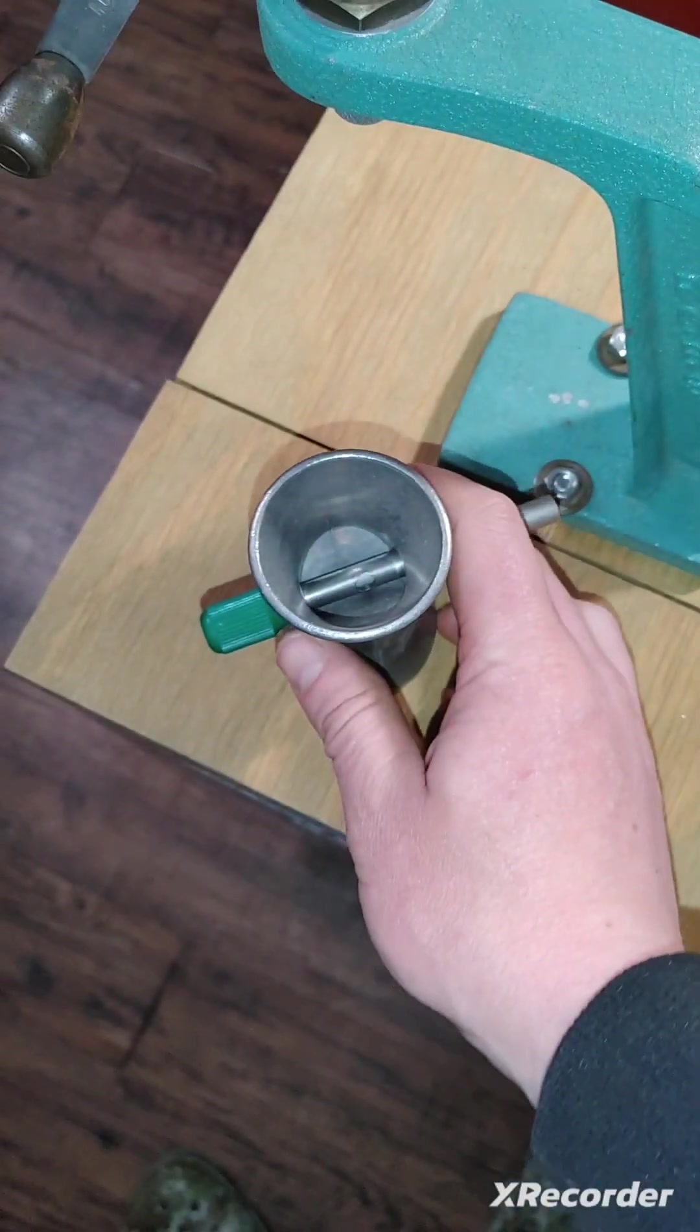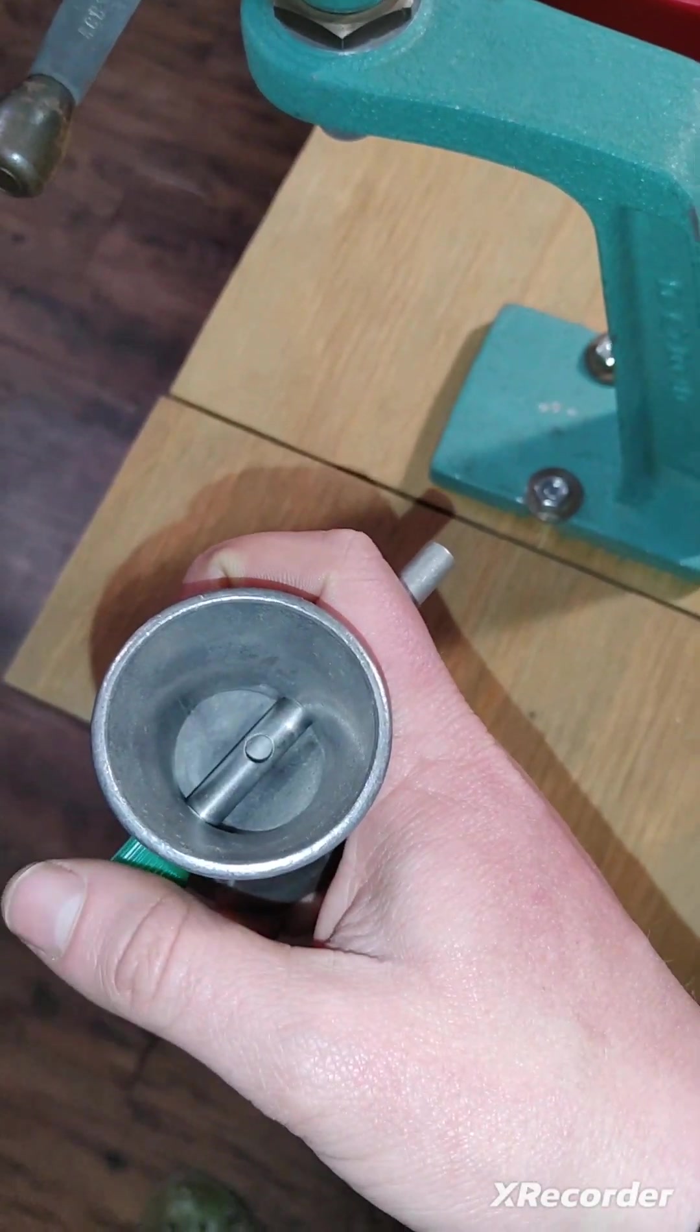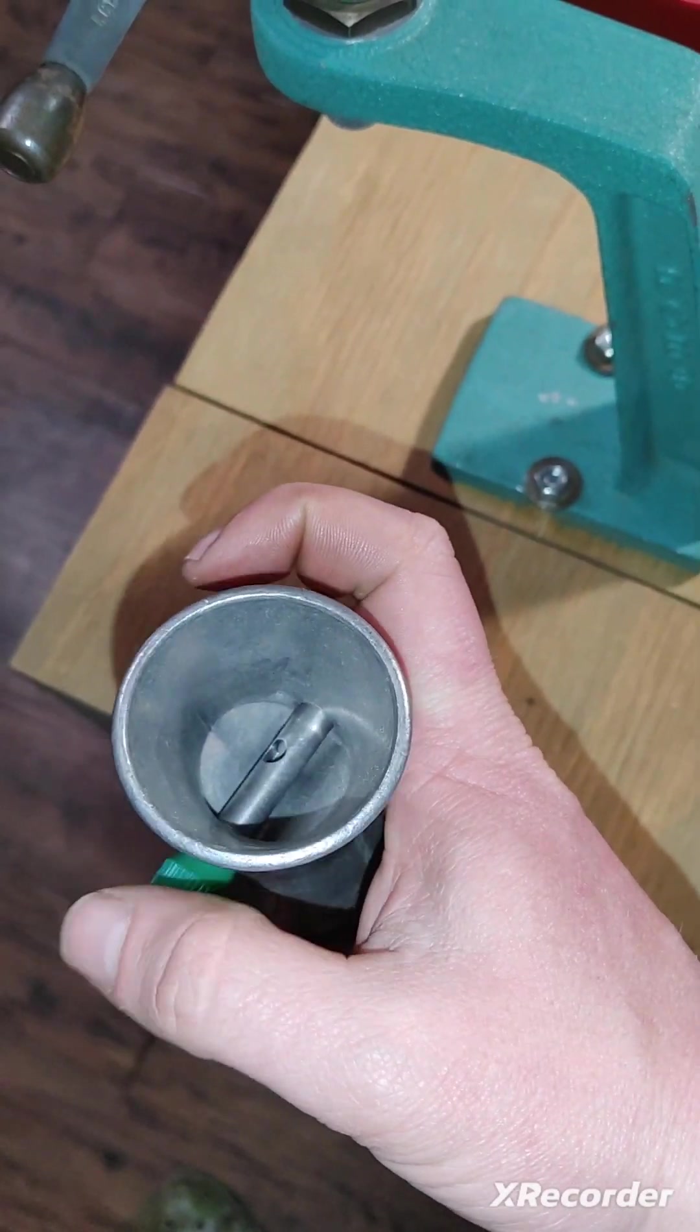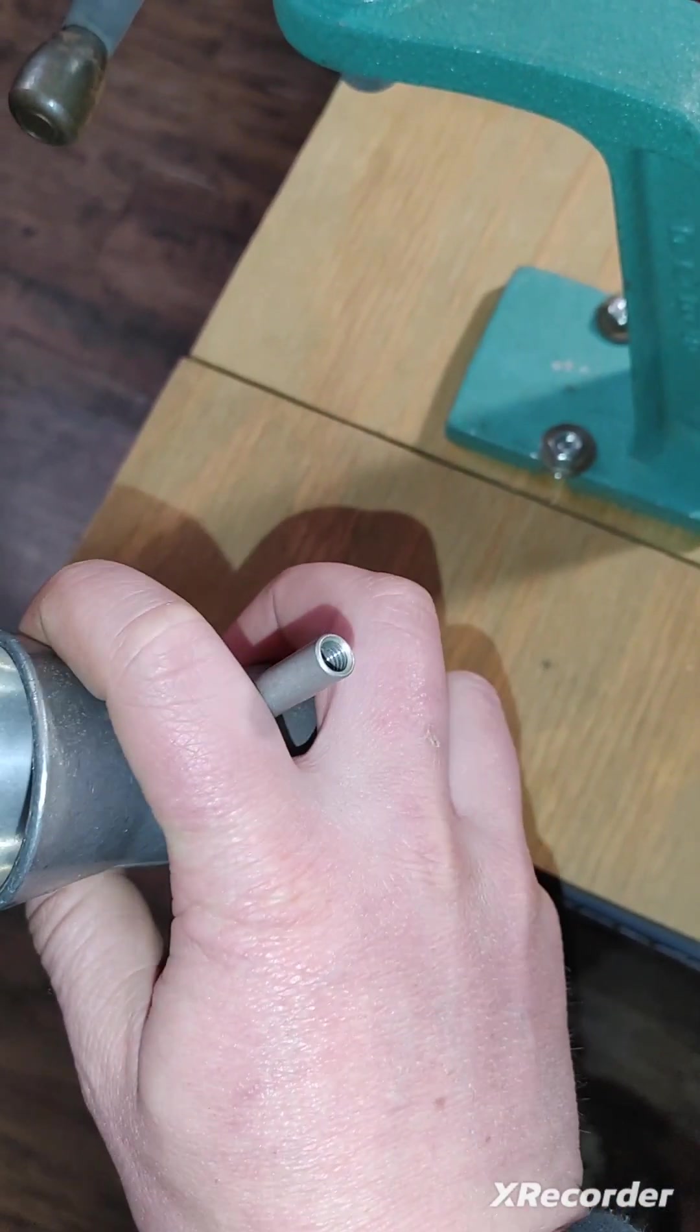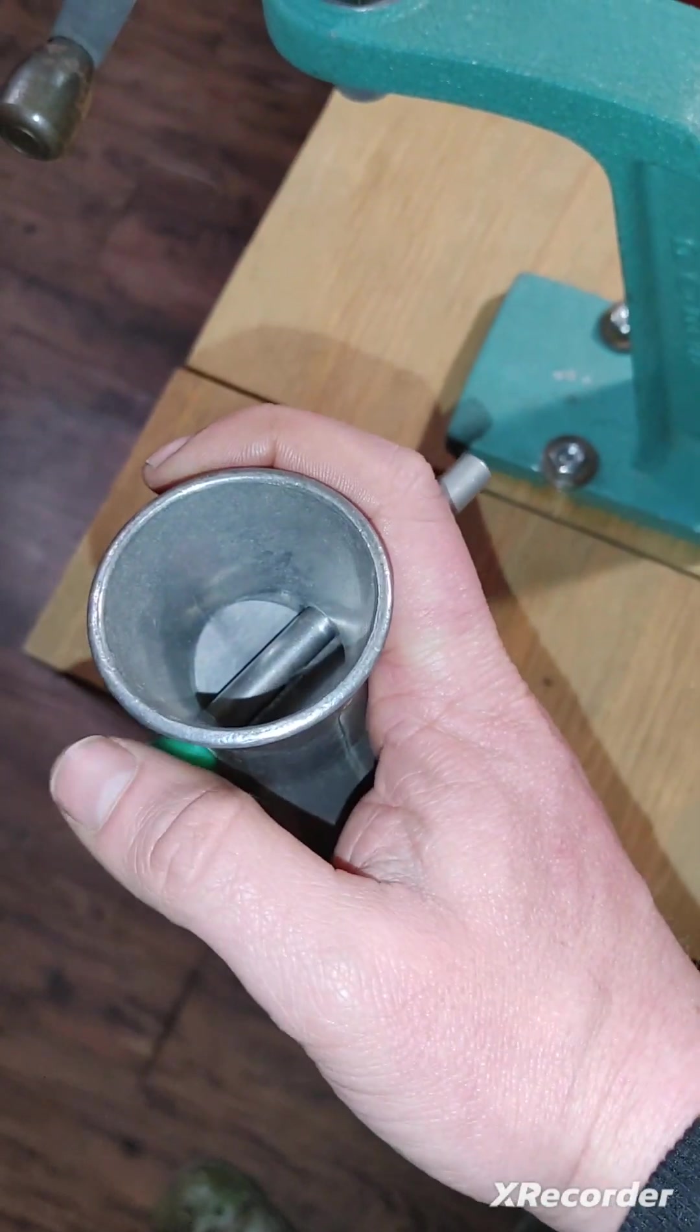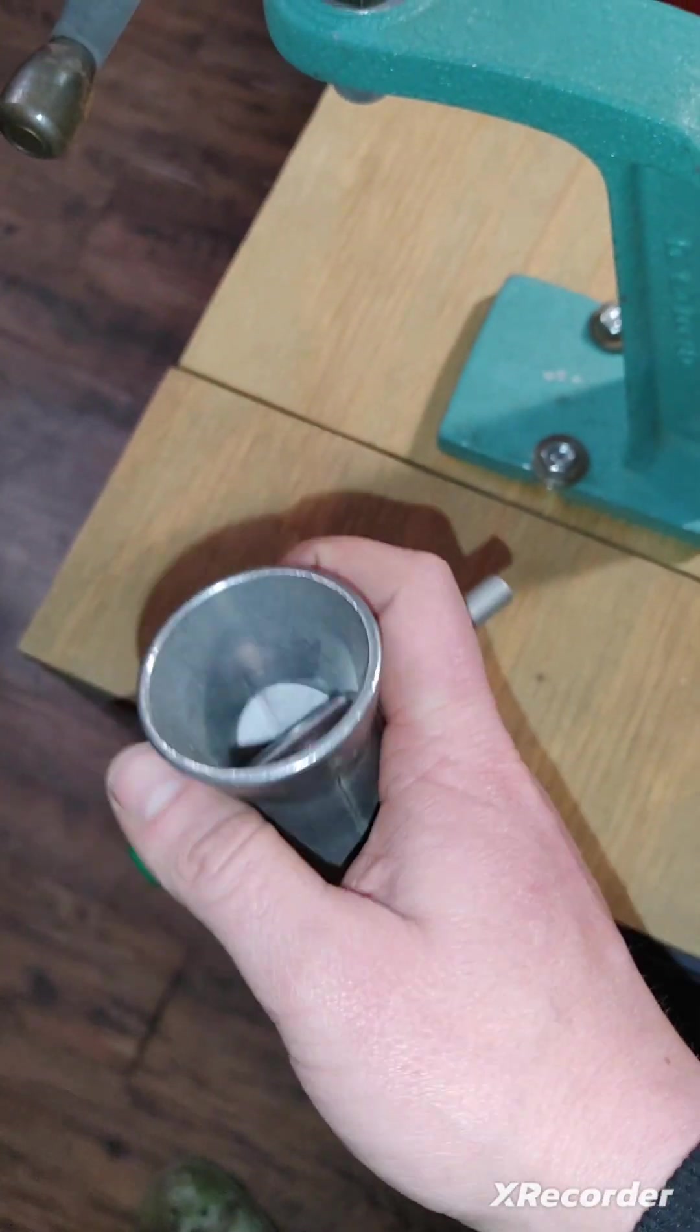So here we've got our powder trickler. Now this works. You pour powder in here. It's got a little hole in there and you spin it around and that lets the powder in there and as you spin it around it's going to work out the threads in this tube and it's just going to trickle the powder into whatever you're trying to trickle it into.